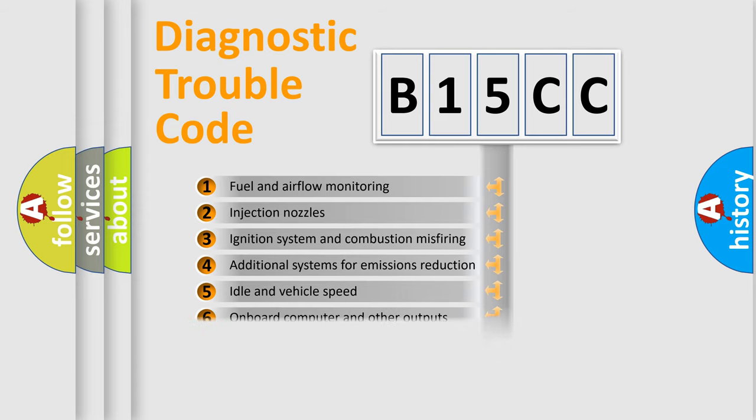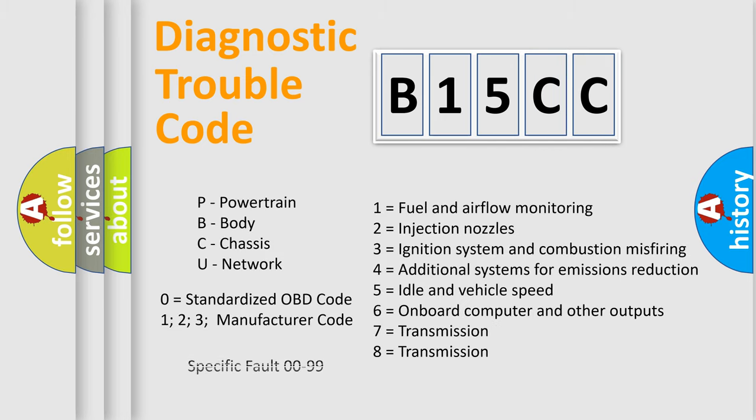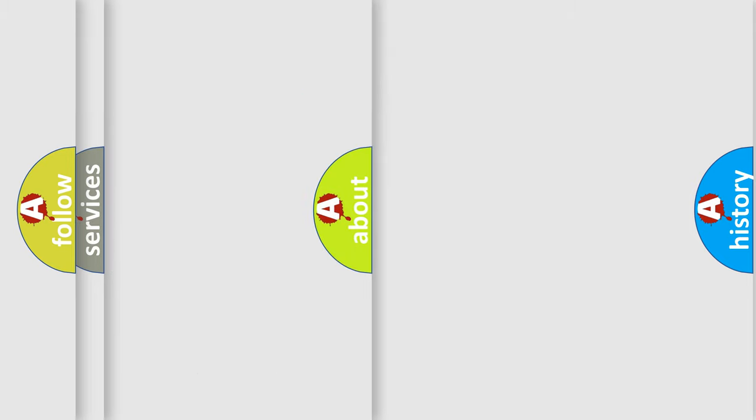The distribution shown is valid only for the standardized DTC code. Only the last two characters define the specific fault of the group. Let's not forget that such a division is valid only if the second character code is expressed by the number zero.